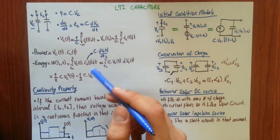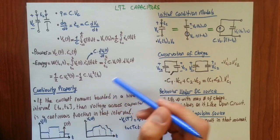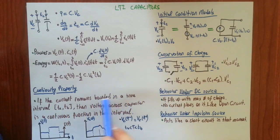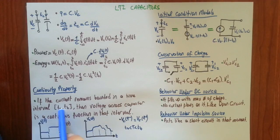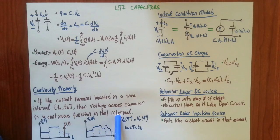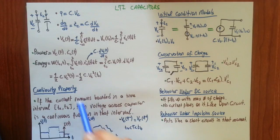Another property of capacitors is continuity property. If the current remains bounded in a time interval between TA and TB, then voltage across capacitor is a continuous function in that interval. This is very handy. We will make use of this property a lot in questions. Please learn this.